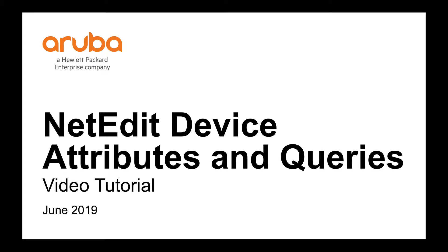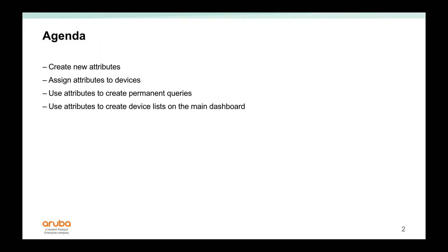In this NetEdit 1.1 tutorial, I will show you how to match device attributes and how to use them to create queries and other tools. We'll take the following steps: we'll create new attributes, we'll assign attributes to devices, we'll use attributes to create permanent queries, and then we'll use the same attributes to create device lists on the main dashboard.